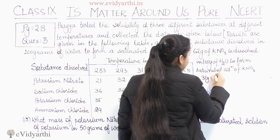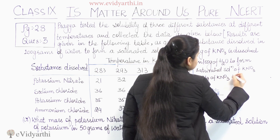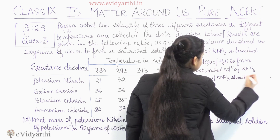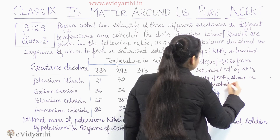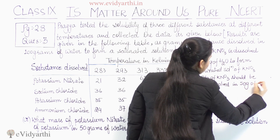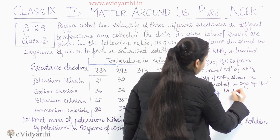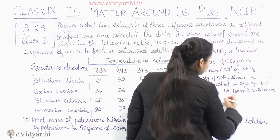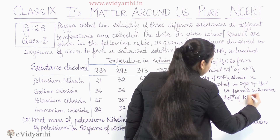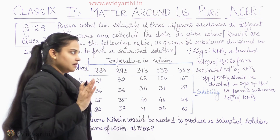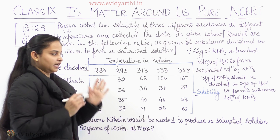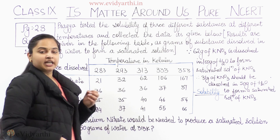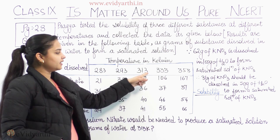Since 62 grams of potassium nitrate dissolves in 100 grams of water to form a saturated solution of KNO₃, therefore 31 grams of KNO₃ should be dissolved in 50 grams of water to form a saturated solution. So we need 31 grams of potassium nitrate to produce the saturated solution in 50 grams of water at 313 Kelvin.